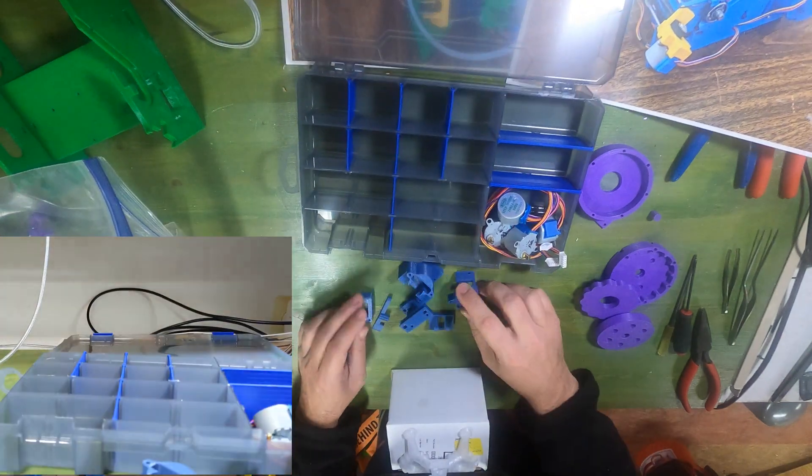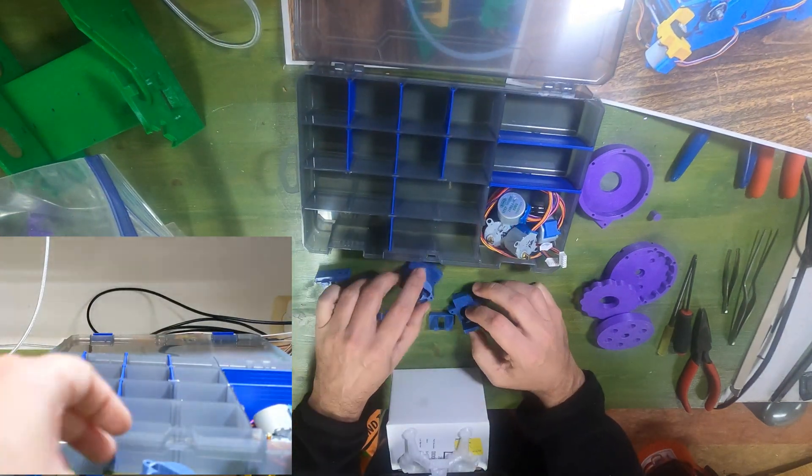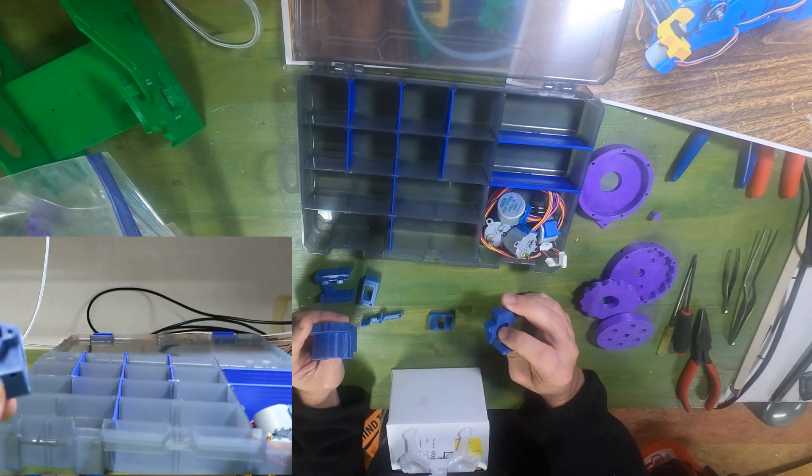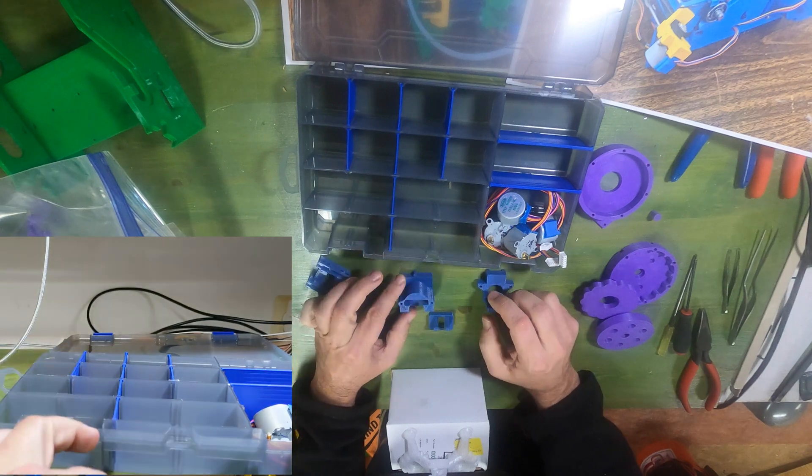These blue parts form the x and y axes as well as the hot end gantry. You can also see the long lever for the extruder tensioner. The extruder itself is built into the side of the frame.